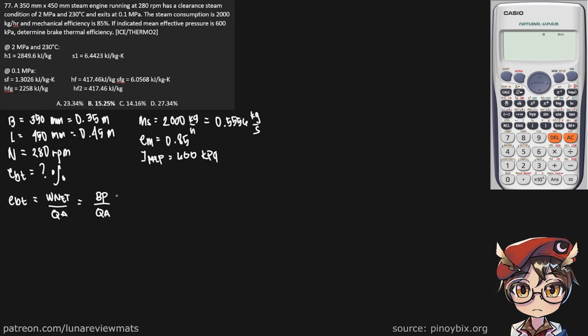So in order to find our brake power, we need to find our indicated power multiplied by the mechanical efficiency. We already have our mechanical efficiency, but to get IP, we need to multiply our indicated mean effective pressure by the volume displacement. So we already have our IMEP, and we just need to find our volume displacement, or VD.